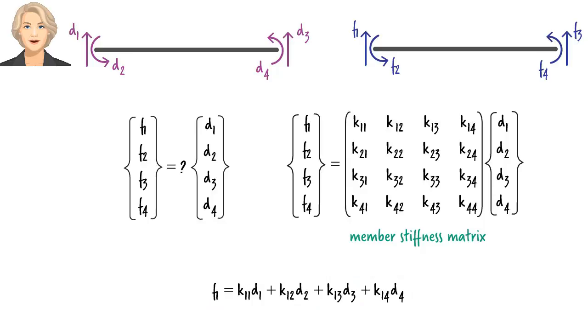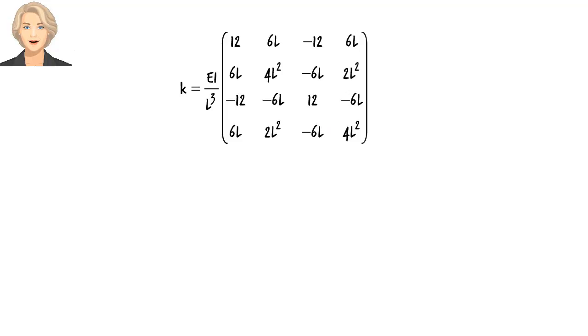How do we determine the values for these 16 stiffness coefficients, you ask? We already have determined them in lecture S445. Let's use them here without any additional derivation. Here they are. This is our generalized beam stiffness matrix. Given a continuous beam, we apply it to each beam segment with its own L, E, and I. Since in our examples we often assume a constant EI, then the only parameter that changes from segment to segment is the length.